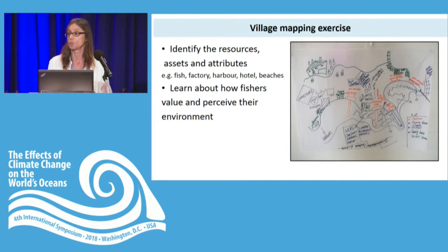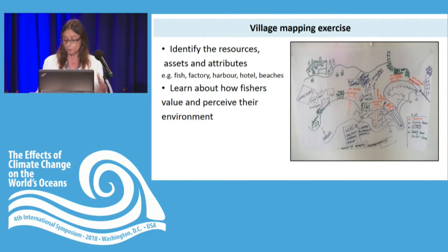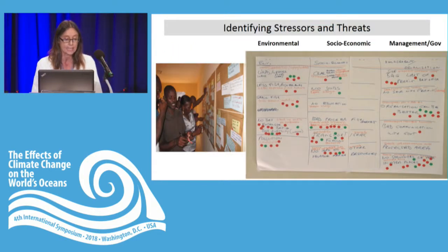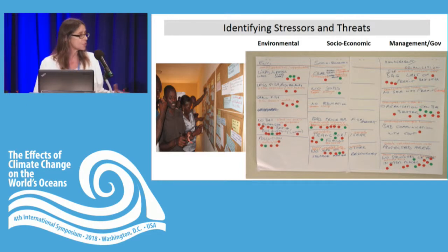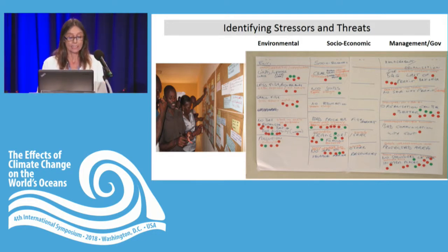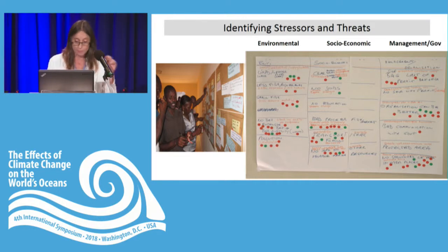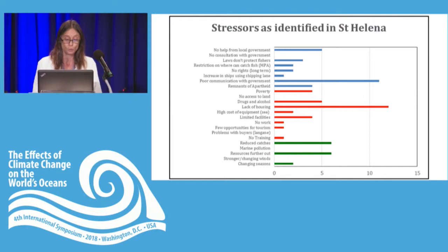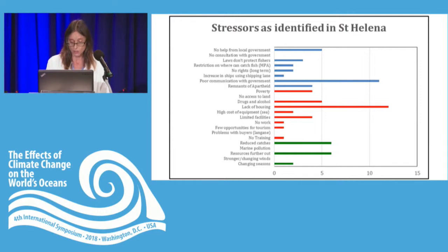We start with a village mapping exercise, which is an excellent icebreaker but also helps communities reflect on their resources, assets, and attributes, while helping facilitators learn how fishers value and understand their environment. We then move into identifying stresses and threats communities face on a daily basis, in the categories of environment, socioeconomic, and management or governance. This is a visual gathering exercise where people present their stresses and threats, which get categorized under different headers. It also gives us an opportunity to identify differences in priorities between men and women, youth, and other groups, giving people different color-coded markers.